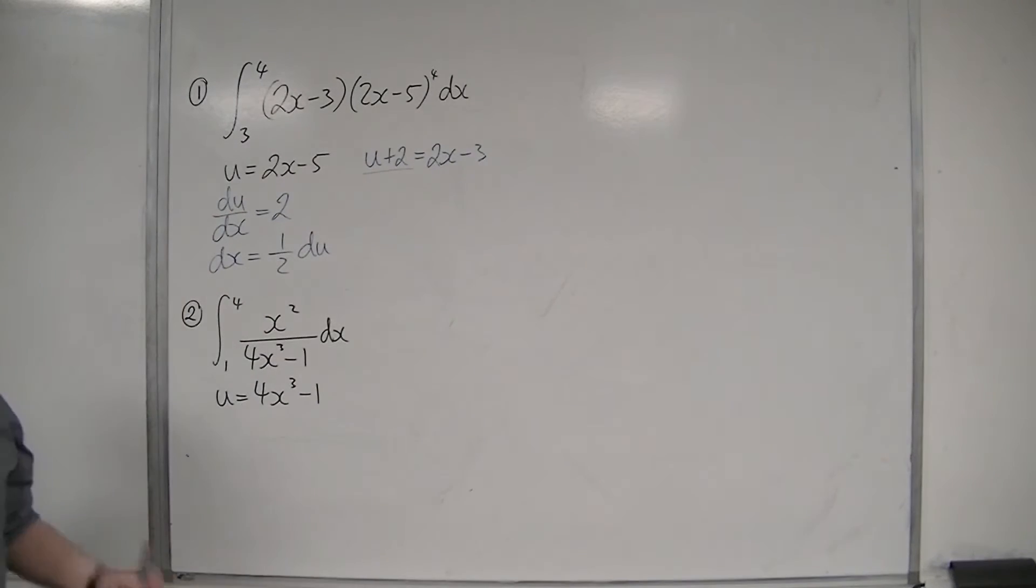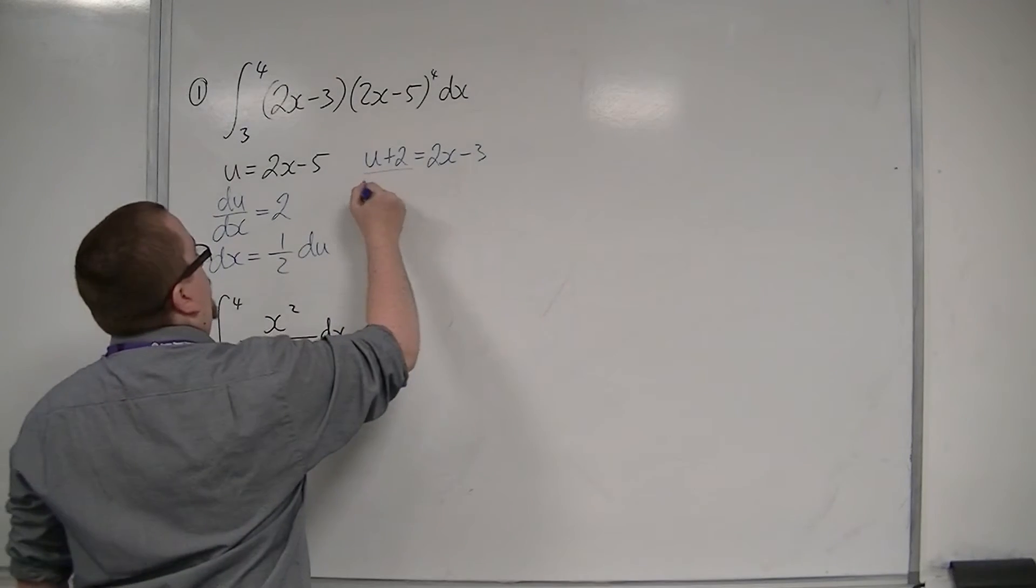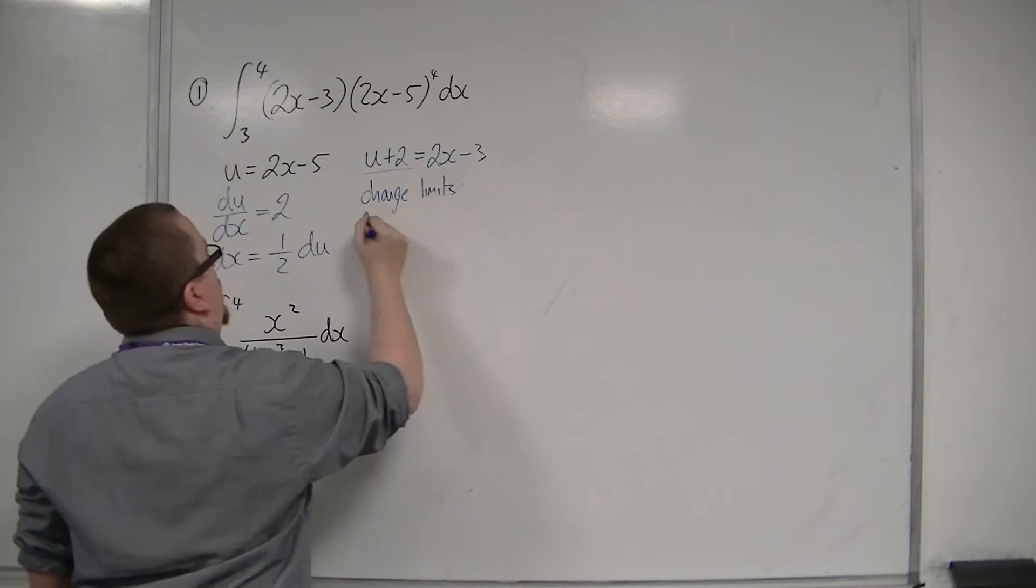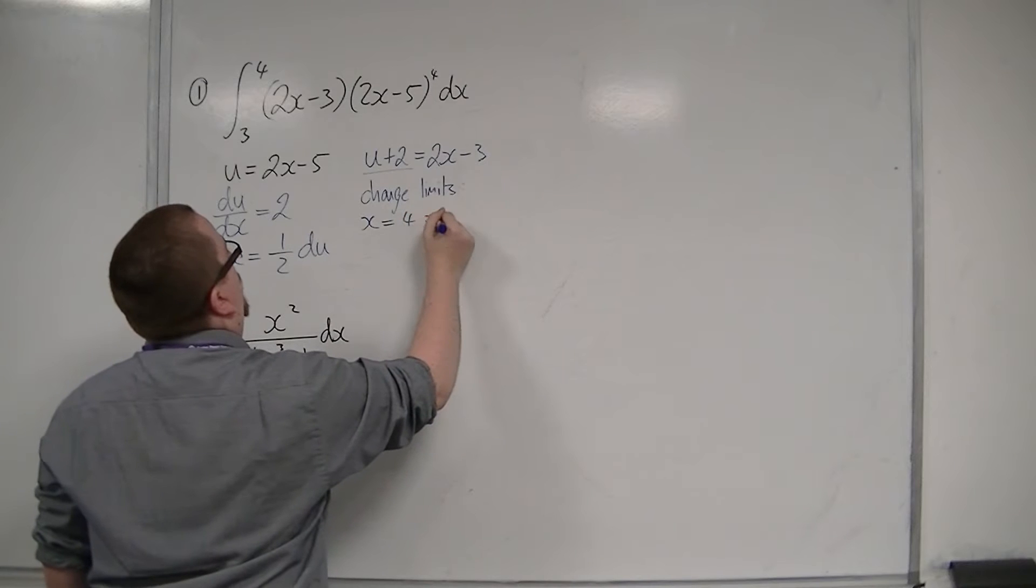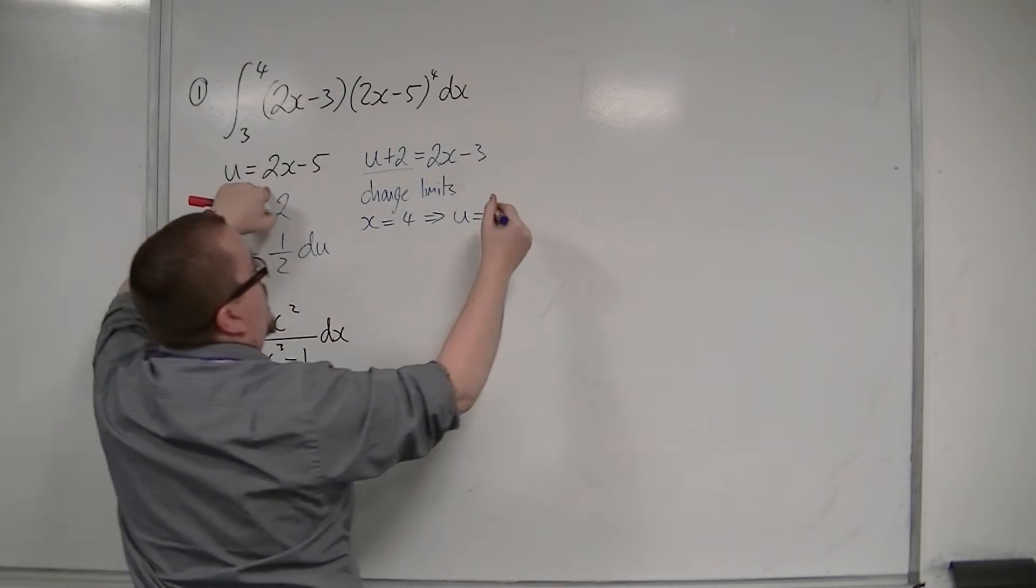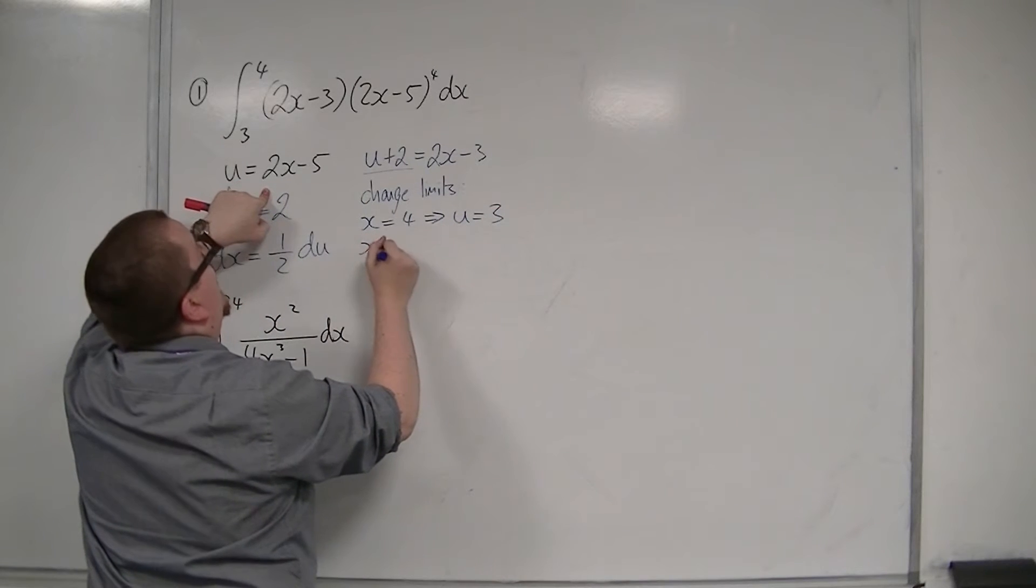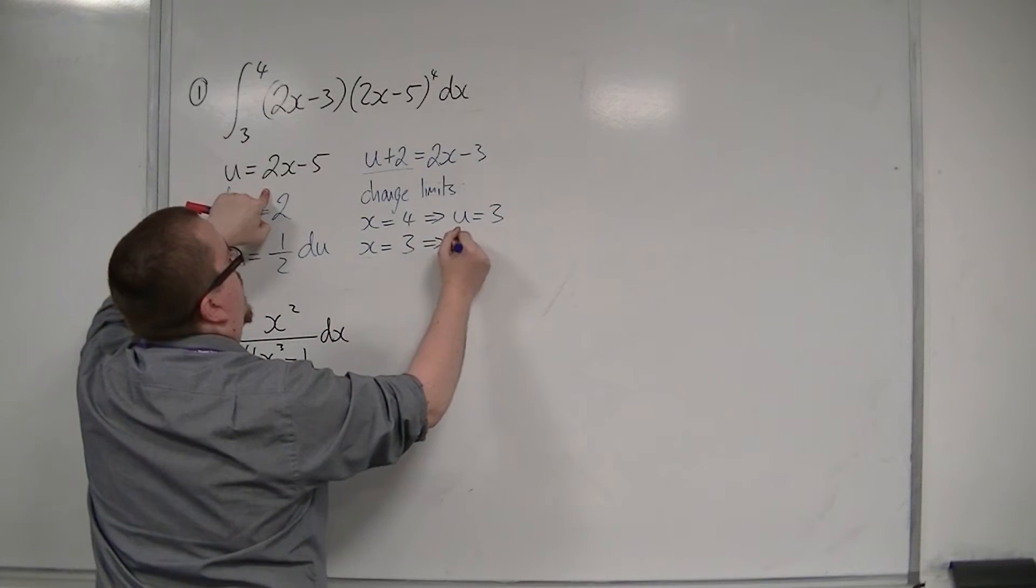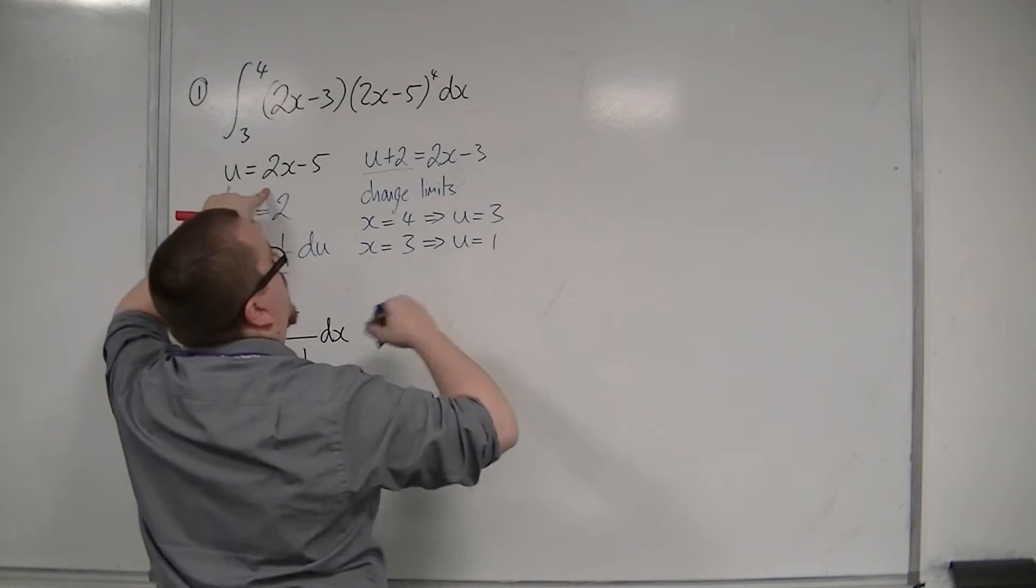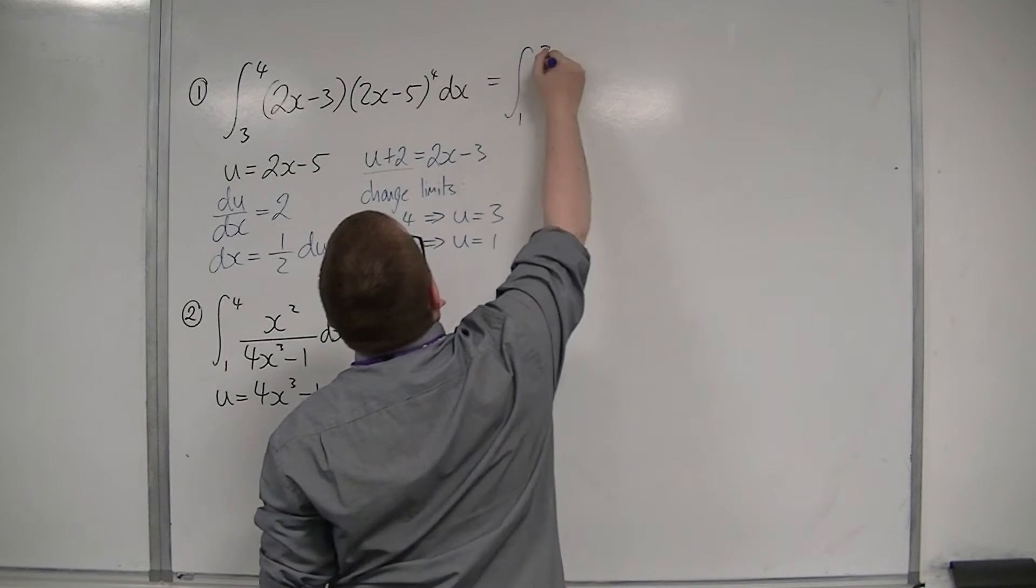I also need to change the limits. So when x is 4, I have 2 lots of 4 take away 5, so 8 take away 5 is 3. And when x is 3, I have 2 lots of 3, so 6 take away 5 is 1.